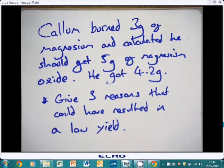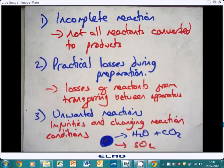Another question you might get could be something like this. Callum burned 3 grams of magnesium and calculated he should get 5 grams of magnesium oxide. He got 4.2. Give three reasons that could have resulted in a low yield, so not getting 100%. These are those three reasons. So number one, the reaction may not have finished, it may be incomplete, so not all the reactants have converted into products.